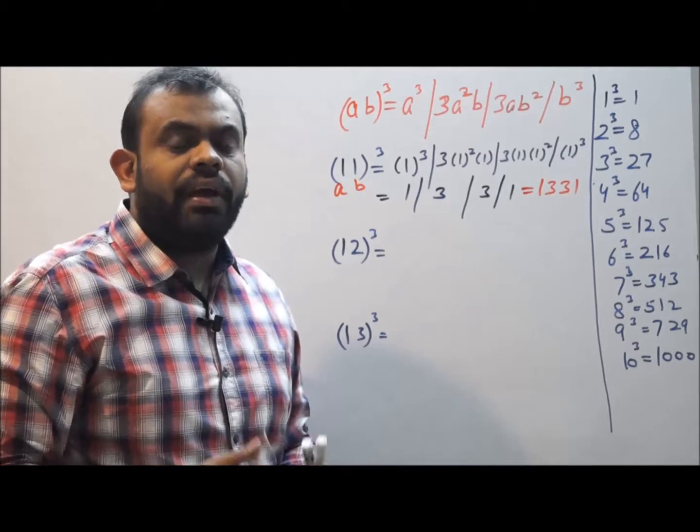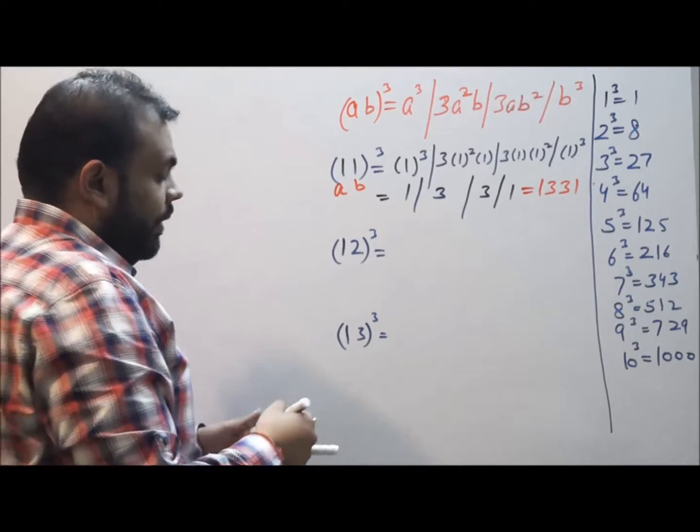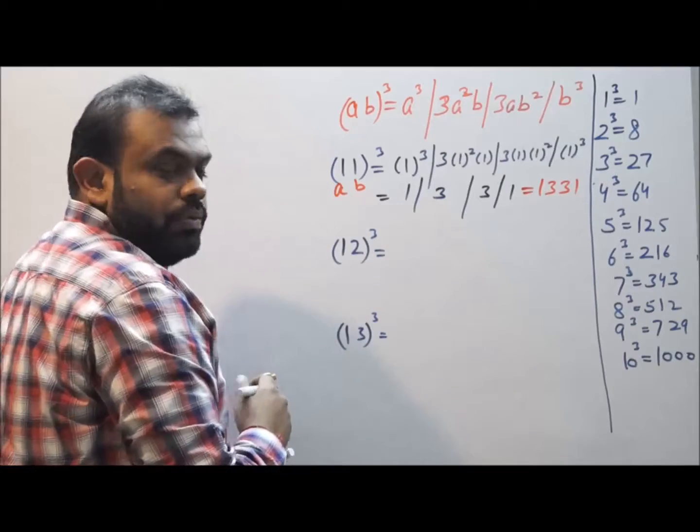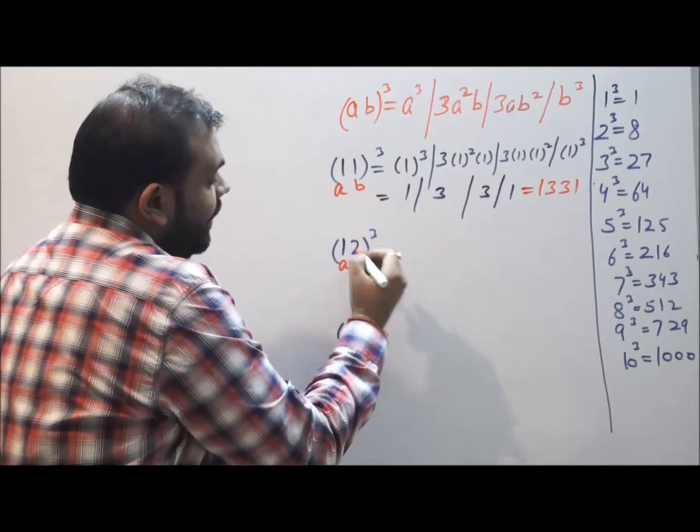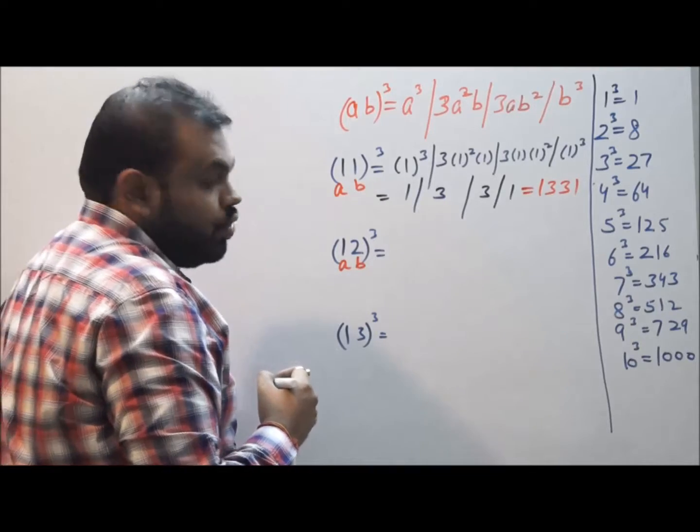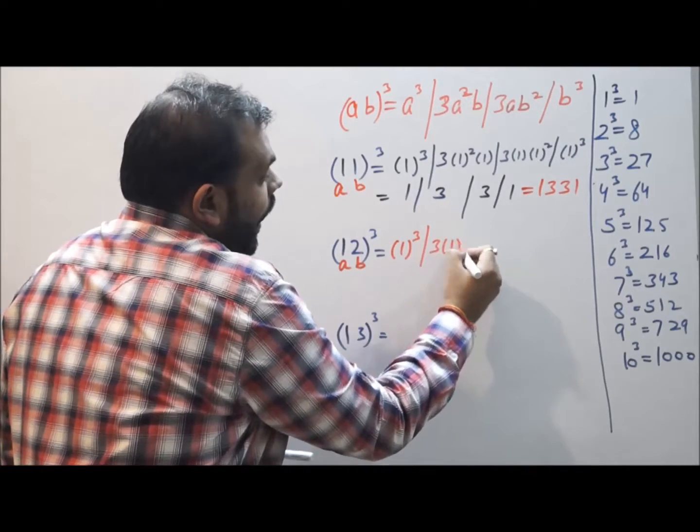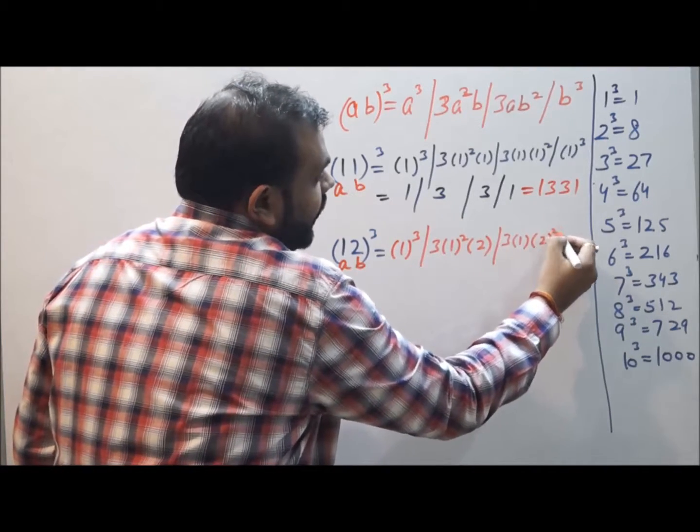In case you are not very clear, I am solving it for you over here. Let us take the example of 12 and find its cube. At the place of a it is 1, at the place of b it is 2. Putting a equal to 1 and b equal to 2, let us solve and see what we are getting.